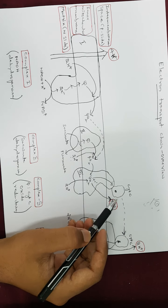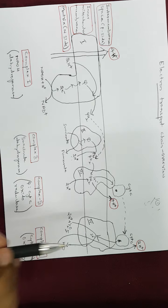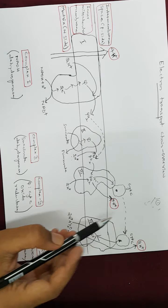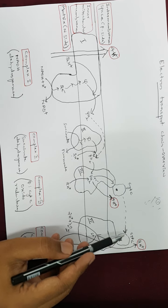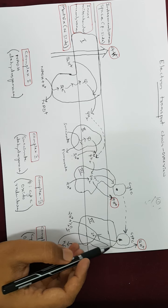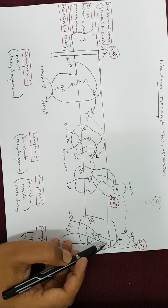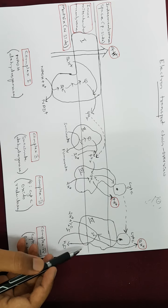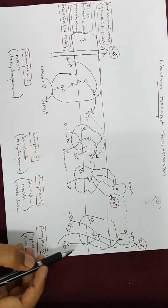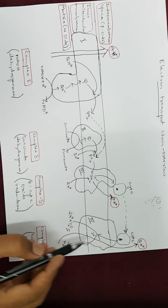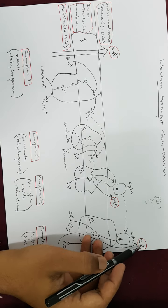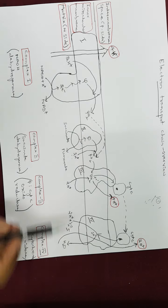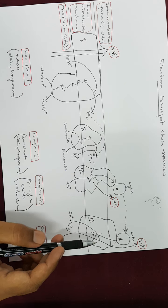Cytochrome C transfers those two electrons to complex four one at a time. These electrons are transferred through the series of electron carriers present in complex four and ultimately transferred to oxygen. Oxygen is reduced into water — a molecule of water is produced. Due to this electron transfer reaction, two protons are pumped into the intermembrane space by complex four.